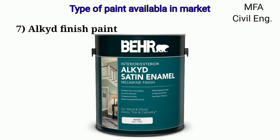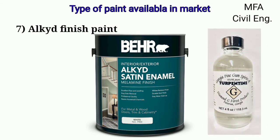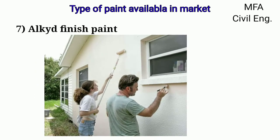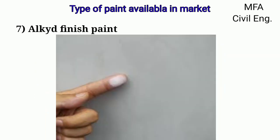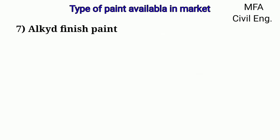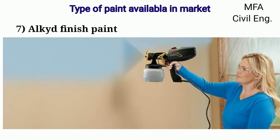Alkyd finish paint may be applied to any surface except unprimed machinery and metals. It is thinned with turpentine or mineral spirits. This finish dries more slowly than latex or acrylic paint. This finish is recommended for chalking surfaces. It can be applied with a brush, roller, or spray gun.